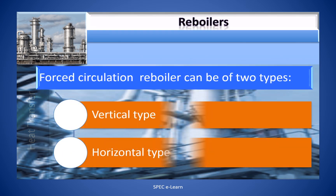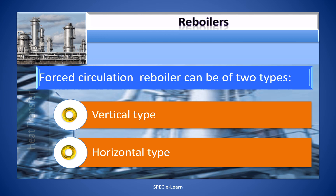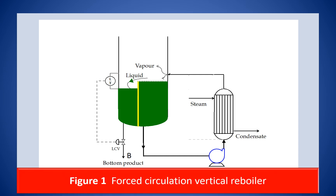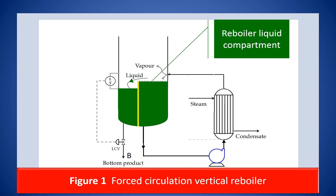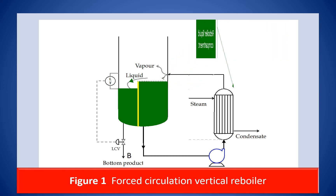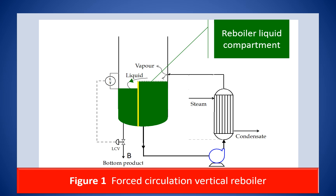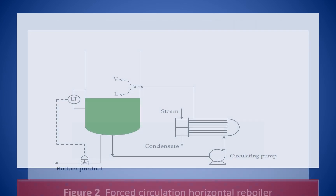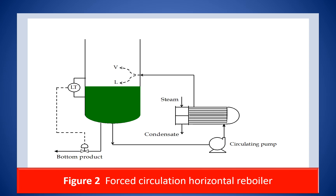Forced circulation reboilers can be of two types: 1. Vertical type, and 2. Horizontal type. The figure shown is an illustration of a forced circulation vertical reboiler. Note that, except for the pump and the elevation requirement, the internal design aspect is similar to the circulating thermosyphon vertical reboiler. There is also an illustration of a horizontal forced circulation reboiler, where the internal column arrangement for the reboiler circuit is the same as the thermosyphon horizontal reboiler.